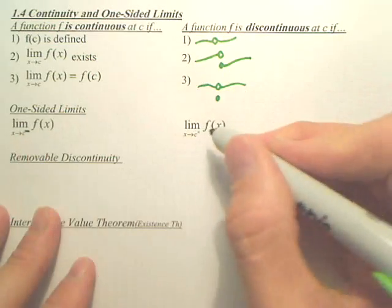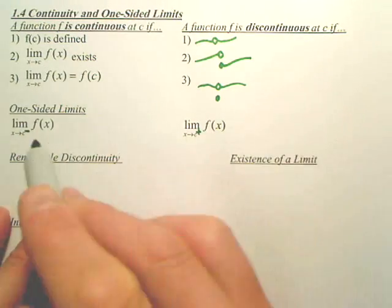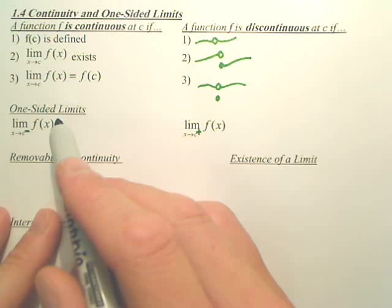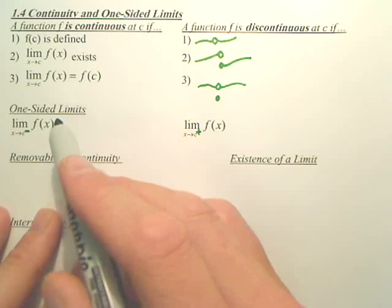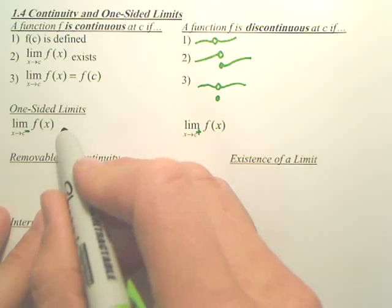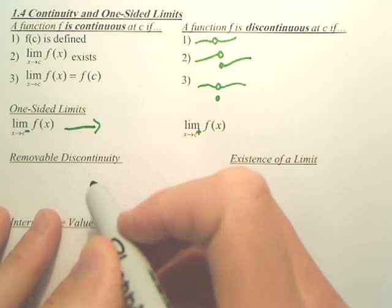This is a minus. I know it's kind of hard to see. This is a plus. One-sided limits meaning exactly what they say. There are limits from one side. If you have a little negative right there, that is basically meaning you're taking the limit from the negative side of a graph.